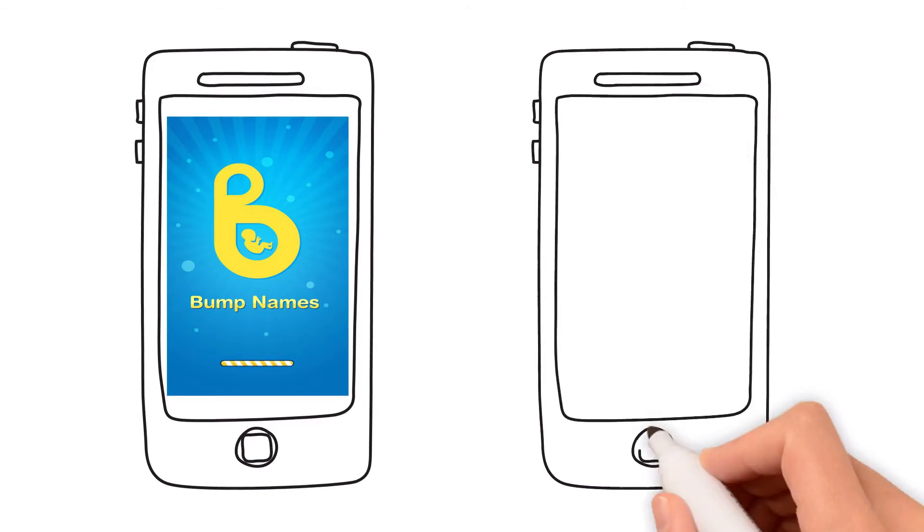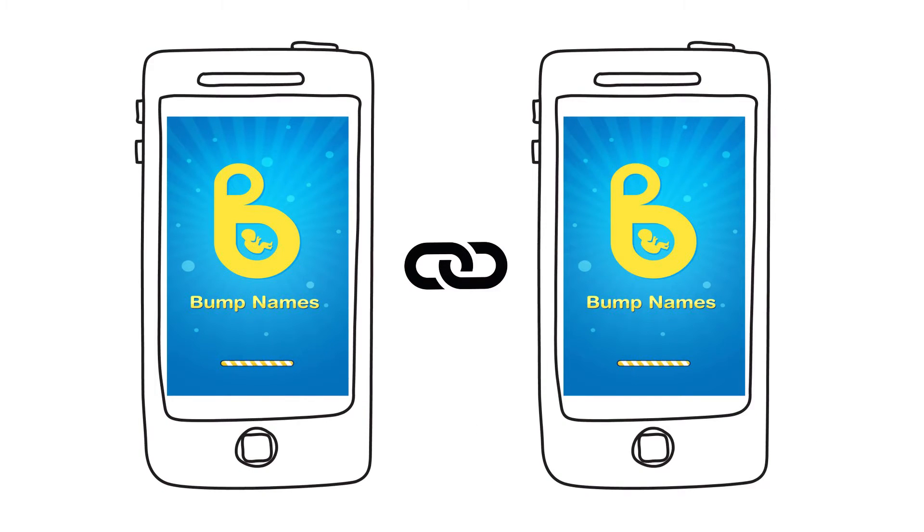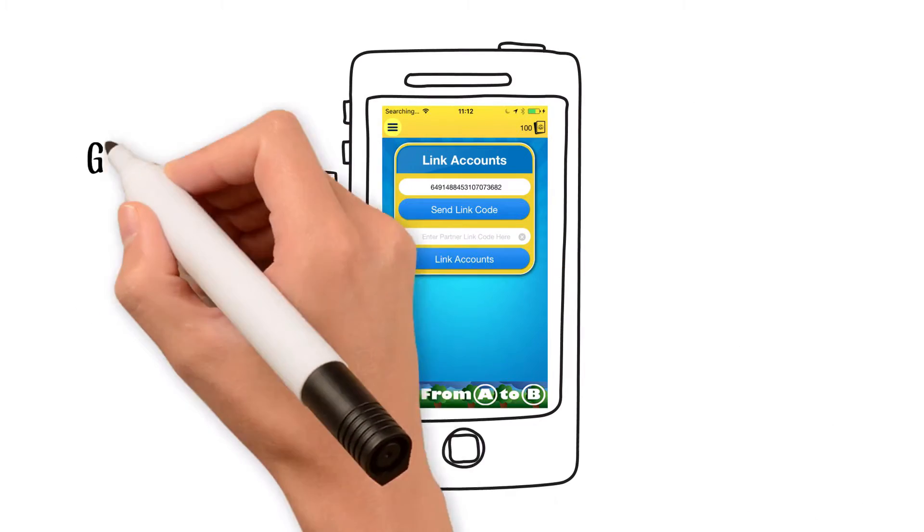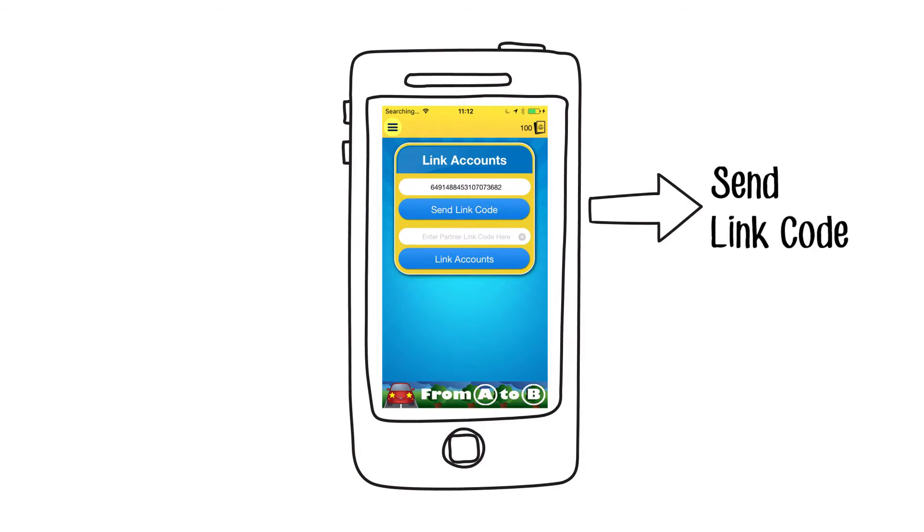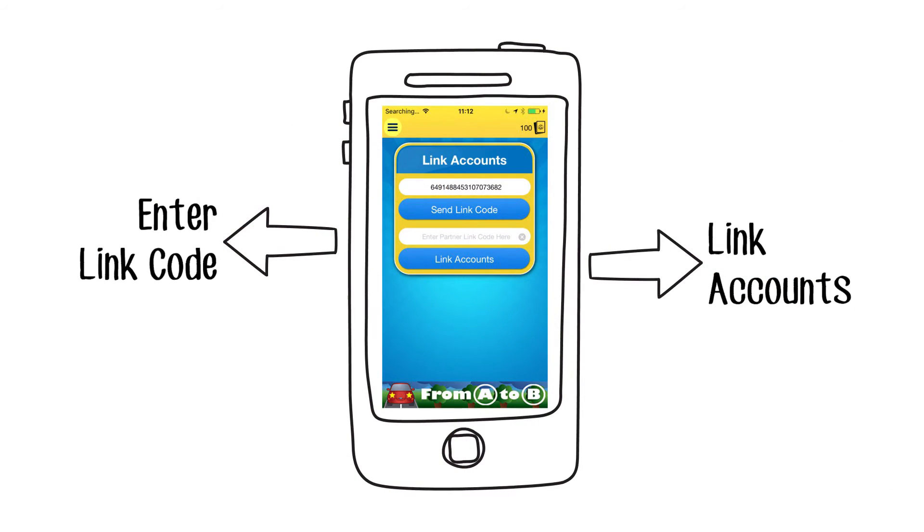But that's not the best part. Bump Names also allows you to link with your partner. Simply generate a code and send to your partner. Once entered into their device, your accounts are linked.